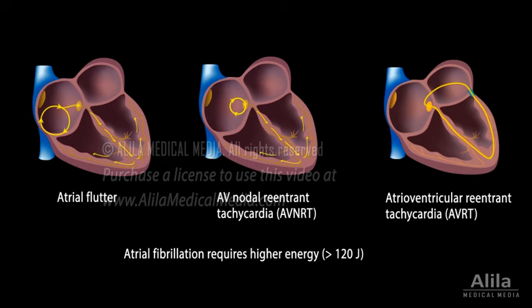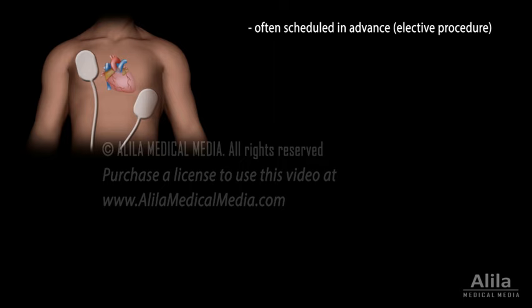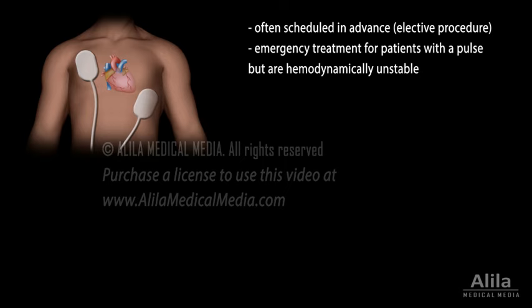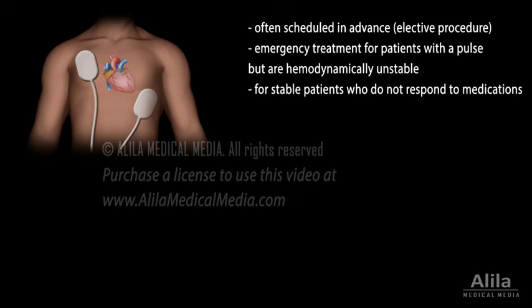Cardioversion is often scheduled in advance as an elective procedure, but it can also be used as an emergency treatment for patients who still have a pulse but are hemodynamically unstable. Stable patients with arrhythmias are usually treated with medications first, in a process known as chemical or pharmacological cardioversion.